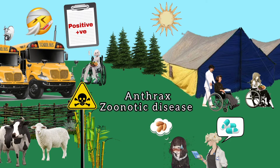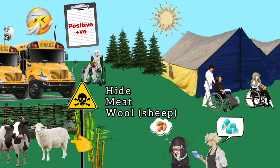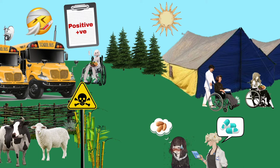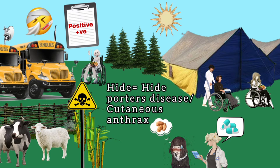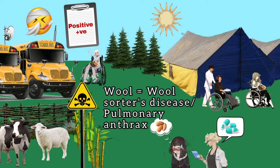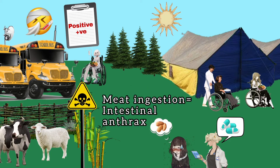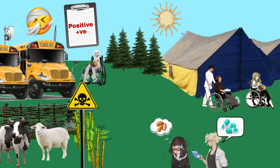Bacillus anthracis causes anthrax, which is a zoonotic disease mainly transmitted by livestock, especially cattle and sheep. From these animals we get three important products: hide or skin, wool, and meat. Correspondingly, anthrax is of three types: from the skin or hide it causes hide potter's disease, also called cutaneous anthrax; from the wool it causes wool sorter's disease, also called pulmonary anthrax; and from ingestion of meat it causes intestinal anthrax.